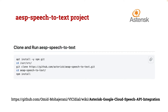Next, we need to clone the AEAP speech-to-text project. I've provided the required commands in the GitHub. This is JavaScript code that connects to Google Cloud. First, install git and npm, then go to /usr/src, clone the source code, navigate to the cloned folder, and run npm install. It will install all dependencies from the GitHub repo.